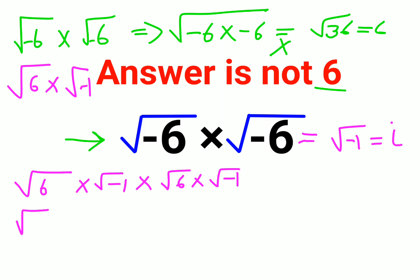So here we have root 6 into root 6. So instead of that because now it's positive, we can put everything under one root. Instead of minus 1, I can write it as what? i into i.